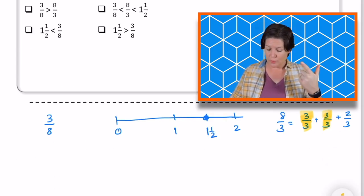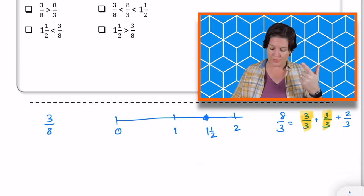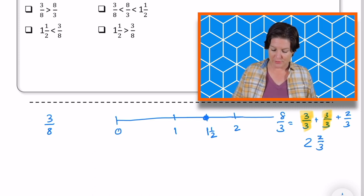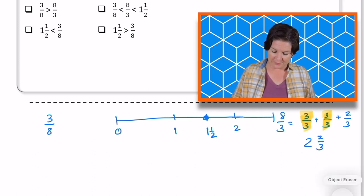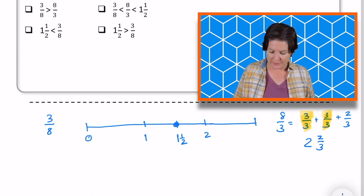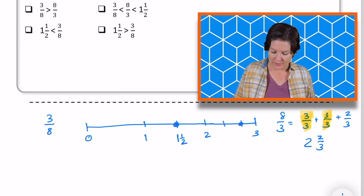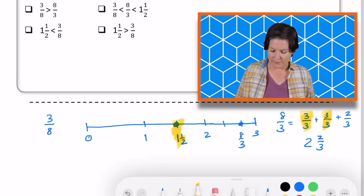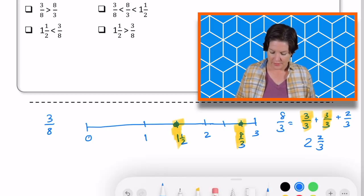So 3 3rds, that's 1 hole. 3 3rds, that's 2 holes. That would be 2 holes and 2 3rds, which would be past this amount. So if I'm continuing my number line to another hole of 3, 2 and 2 3rds would be right about here. That's 2 and 2 3rds, which is the same thing as 8 3rds. So we have 1 1⁄2. We have 8 3rds right there.